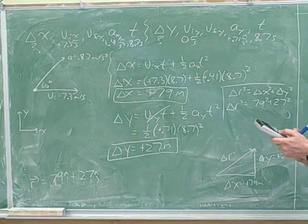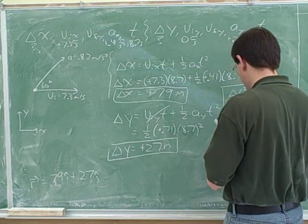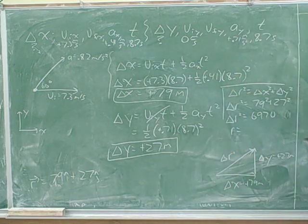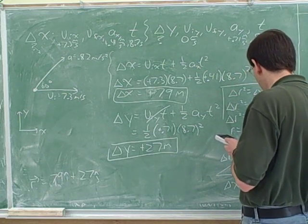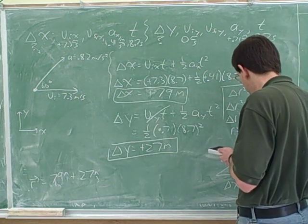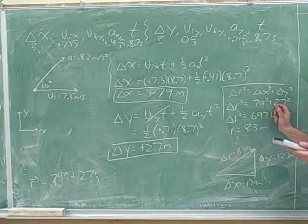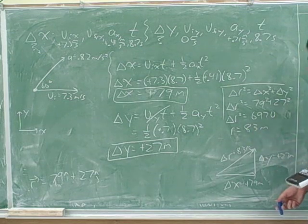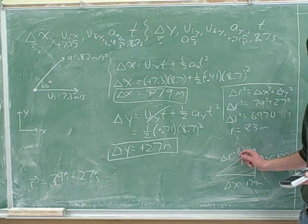I forgot to take the square root earlier, giving 83.48. Rounding that off, you could say 83 or 84 depending on how you round. Because I rounded the components, I got 83.48, which rounds to 83. If you rounded differently you might get a slightly different answer. When you do the homework it tells you how much to round off, and on exams the instructor won't care too much.